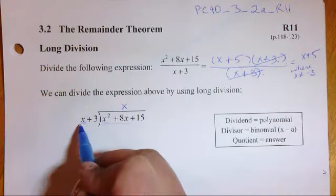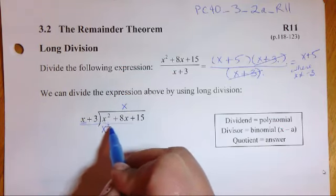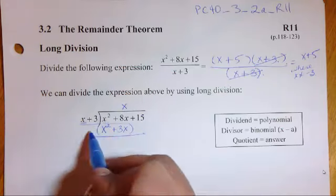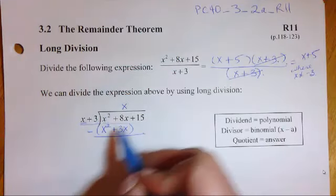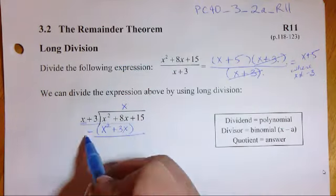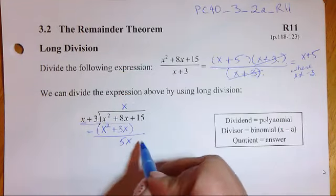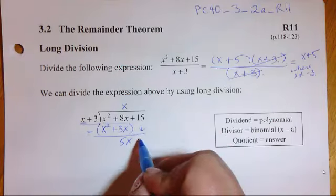And then we take this x and we multiply it through here. And then we write the answer just below. So it's x squared plus 3x. The next thing we would do is we would subtract. So x squared minus x squared is 0. That's what we want. And 8x minus 3x is 5x. Then what we do is we bring down that 15.